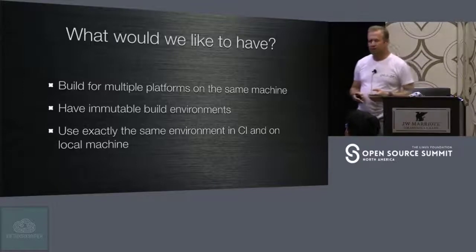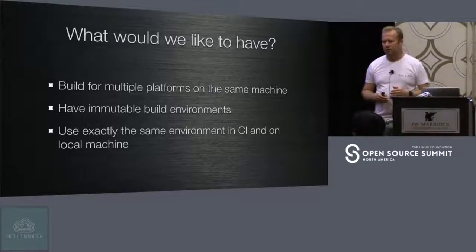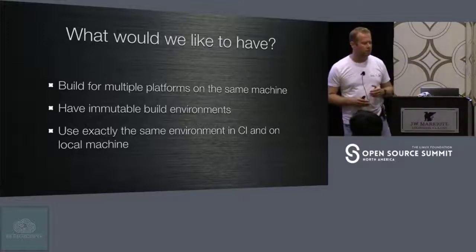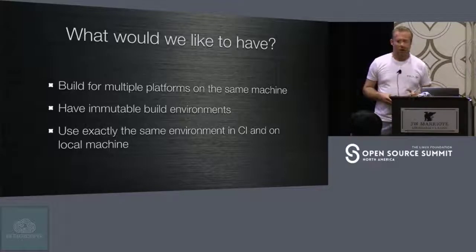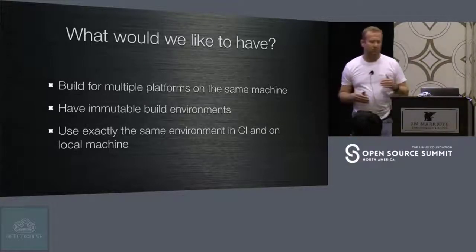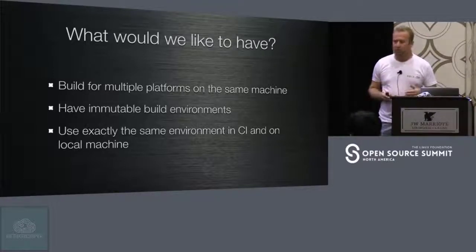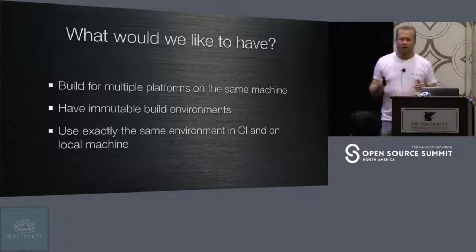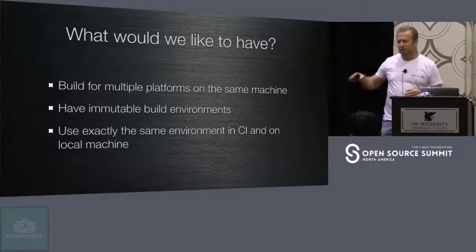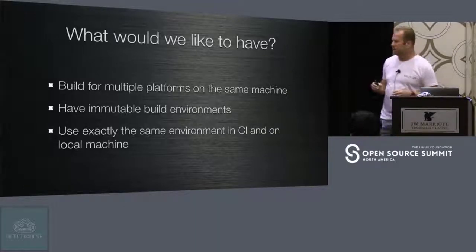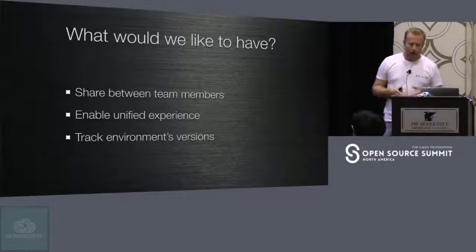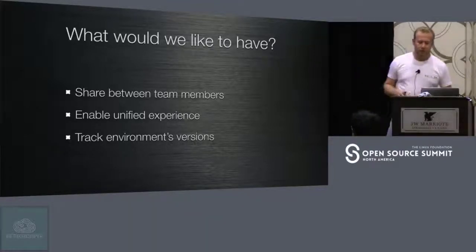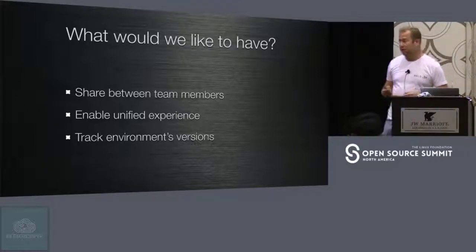So what we would like to have — and there are several levels. For an individual contributor or developer, we would like to be able to run environments for multiple platforms on the same development machine. We want an immutable build environment, so when we run builds it doesn't change unless we want it to. And we want the same environment used on our development machine to also be used on the build server or CI server. For the team, we want to share build environments between team members with a unified experience regardless of what distro or operating system they use.